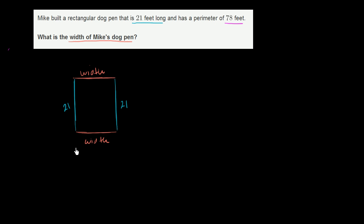Now, how do you calculate the perimeter of this? They tell us that the perimeter is 78 feet, but how do we calculate the perimeter using this information? Well, the perimeter is just the sum of these two widths and these two lengths.